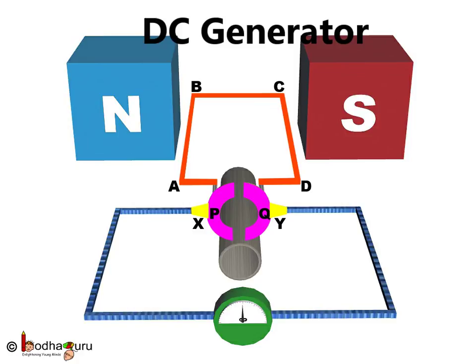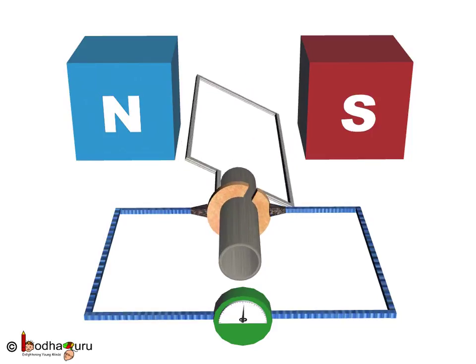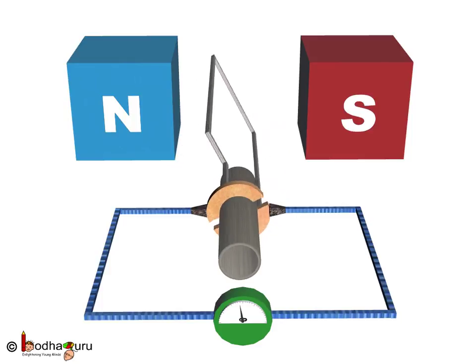The external conducting edges of the two half rings P and Q touch the two conducting brushes, i.e., X and Y. But in this arrangement, we will get direct current, not alternating current.